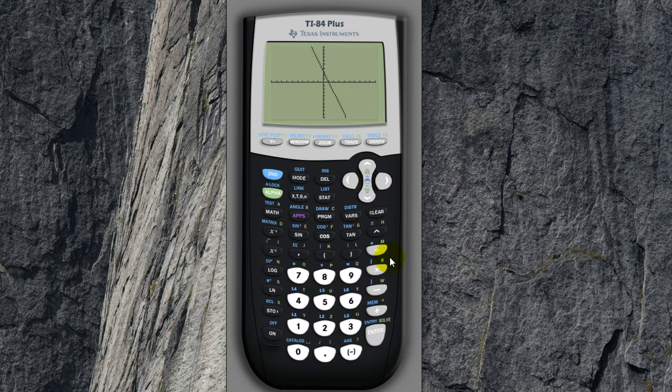Now the next thing I want to talk about is changing the viewing window. So if you press the window button here, you can see that you can set the minimum x coordinate, the maximum x coordinate, and the scale of the x axis. So what that scale value means is between each one of these dots, what is the value. So it's going right now from 0, negative 1, negative 2, negative 3, and so on.